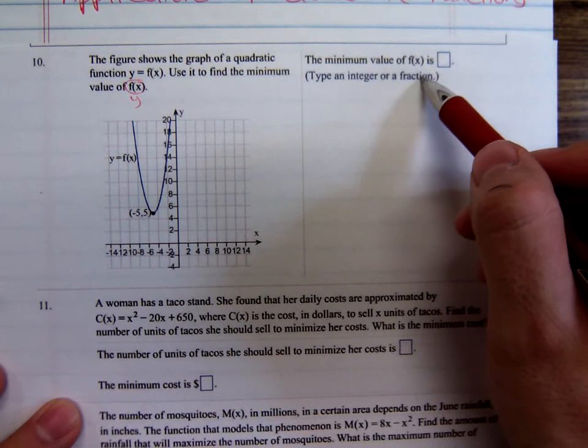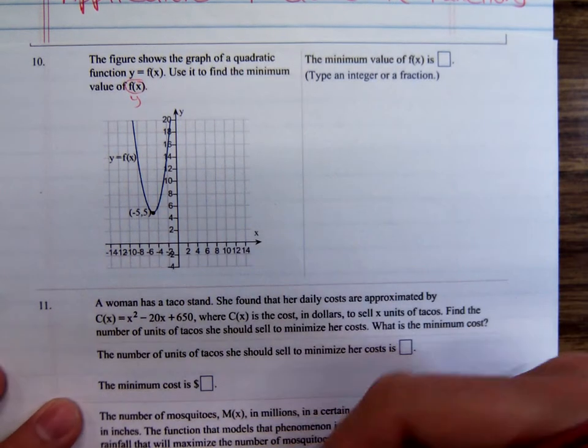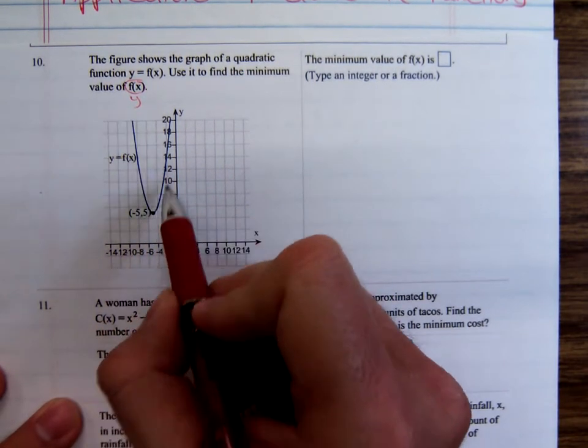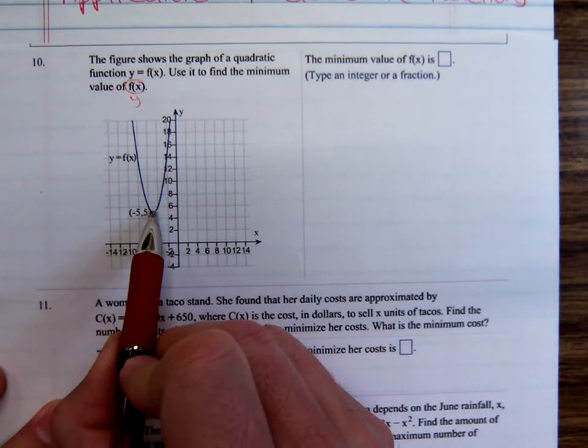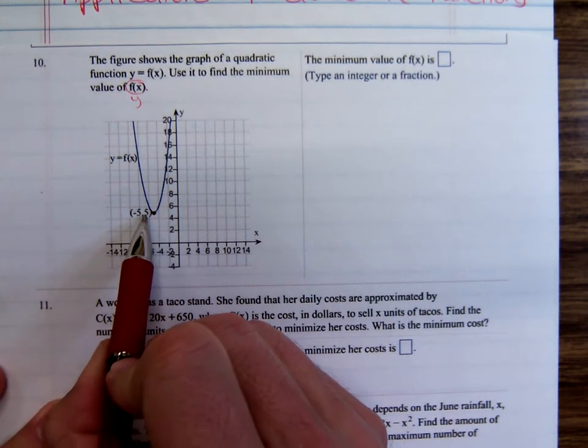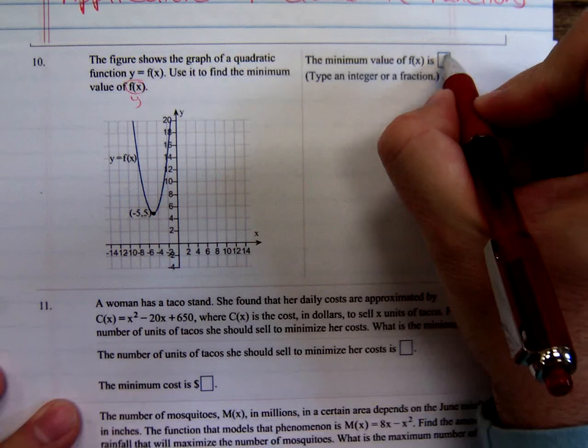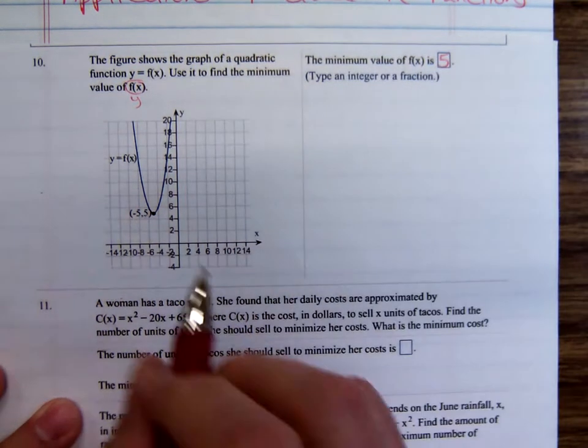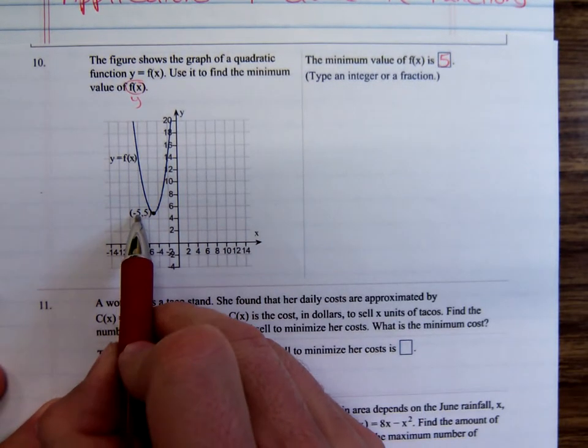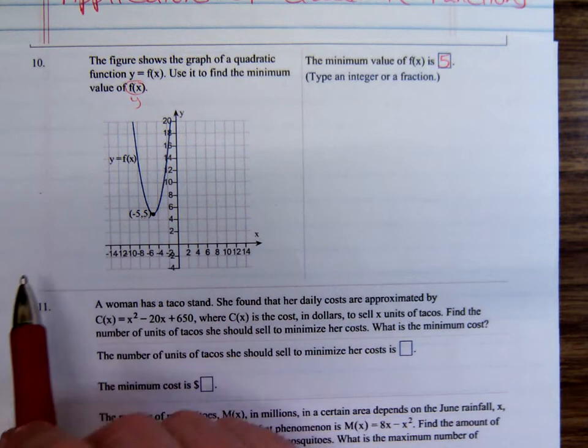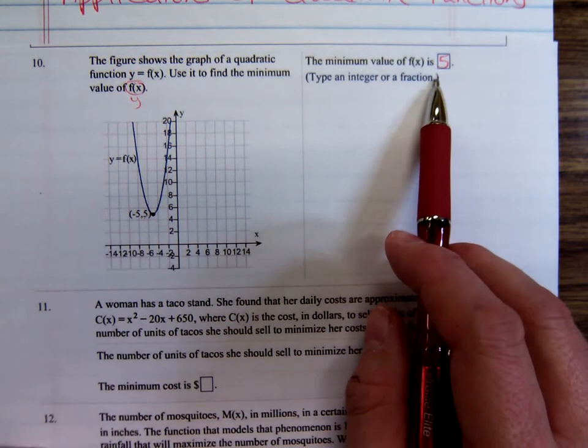Look at the graph and find the smallest y value. That's going to be the easiest problem we'll do this semester. What's the smallest y value in this graph? It is positive 5. Sometimes students will say negative 5, but that's an x value, not a y value.